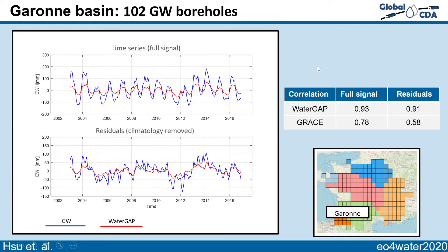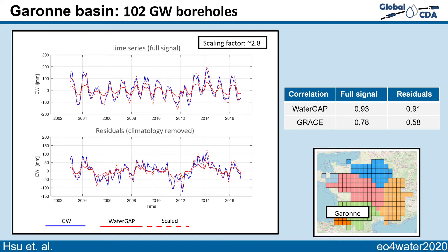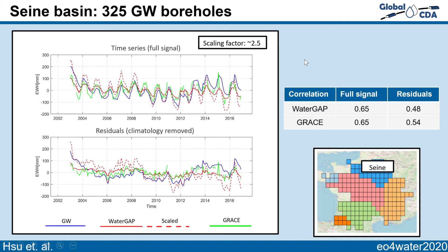Let's have a look at the equivalent water height for La Garonne basin. We can see the seasonal signal — the correlation between the groundwater observations (the blue curve) and WaterGAP is high, even after removing the climatology. The residuals show the amplitude seems a bit smaller for WaterGAP, so I calculated a scaling factor and applied it. I also calculated the GRACE correlation here.